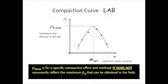Notice that the curve has a peak; therefore, there is a compaction water content that optimizes the compaction process. That is to say, if the soil is compacted at the optimal water content, then the highest dry mass density achievable in the lab is obtained. This dry mass density is called the maximum dry density, ρd max. ρd max is unique to a specific compactive effort and method, and does not necessarily reflect the maximum dry mass density obtainable in the field, because different compactive effort and means are used there.